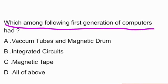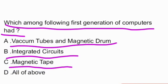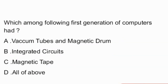Next question: which among the following did the first generation of computers have? The options given are: vacuum tubes and magnetic drum, integrated circuits, magnetic tape, all of the above. And the answer is — the first generation of computers consisted of vacuum tubes and magnetic drum. That is option A, the right answer.